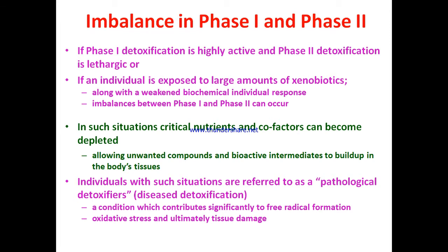In pathological detoxification, phase one is faster so metabolic intermediates accumulate in the body, while phase two is lethargic — causing this accumulation. This condition significantly contributes to free radical formation, leading to oxidative stress and ultimately tissue damage.